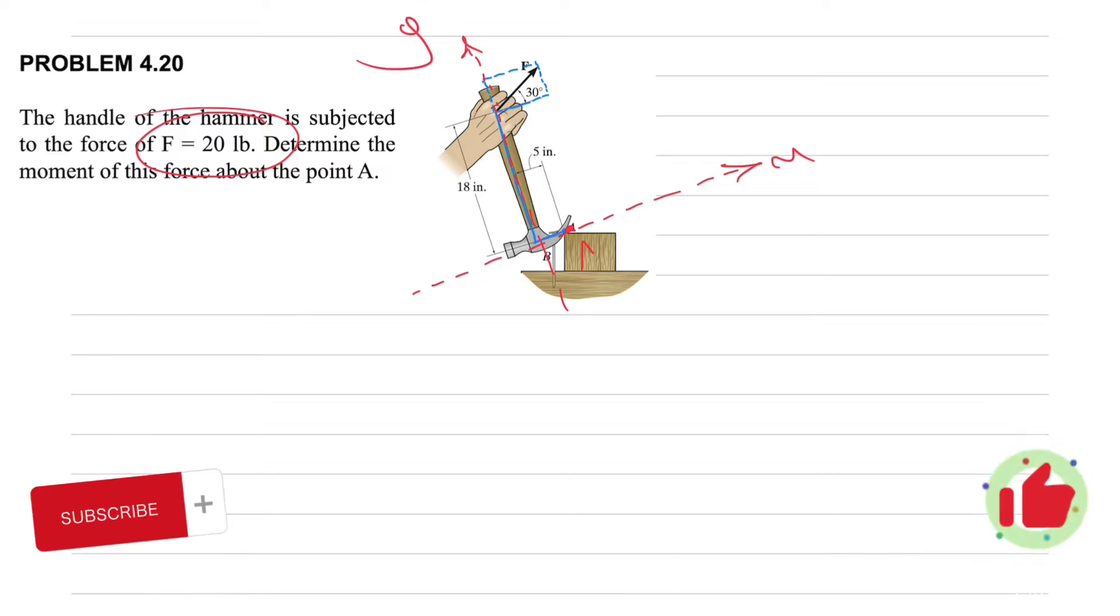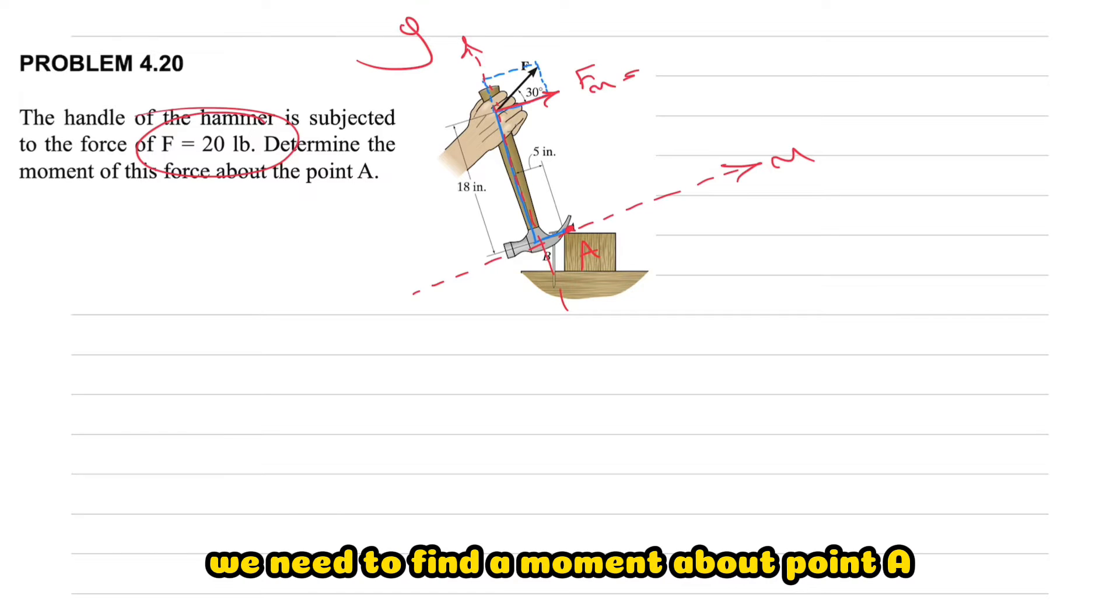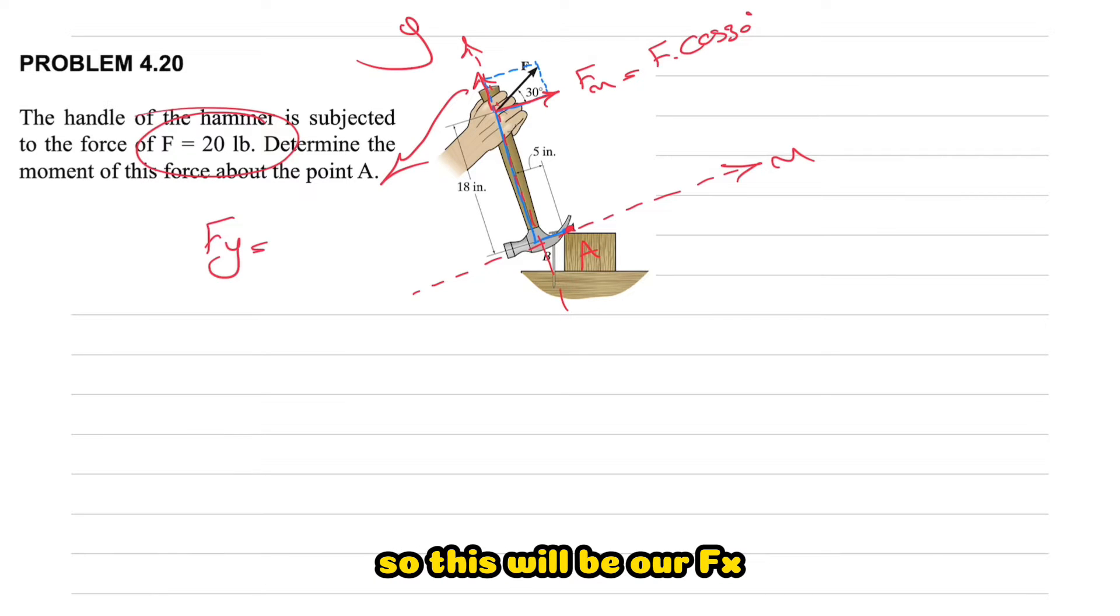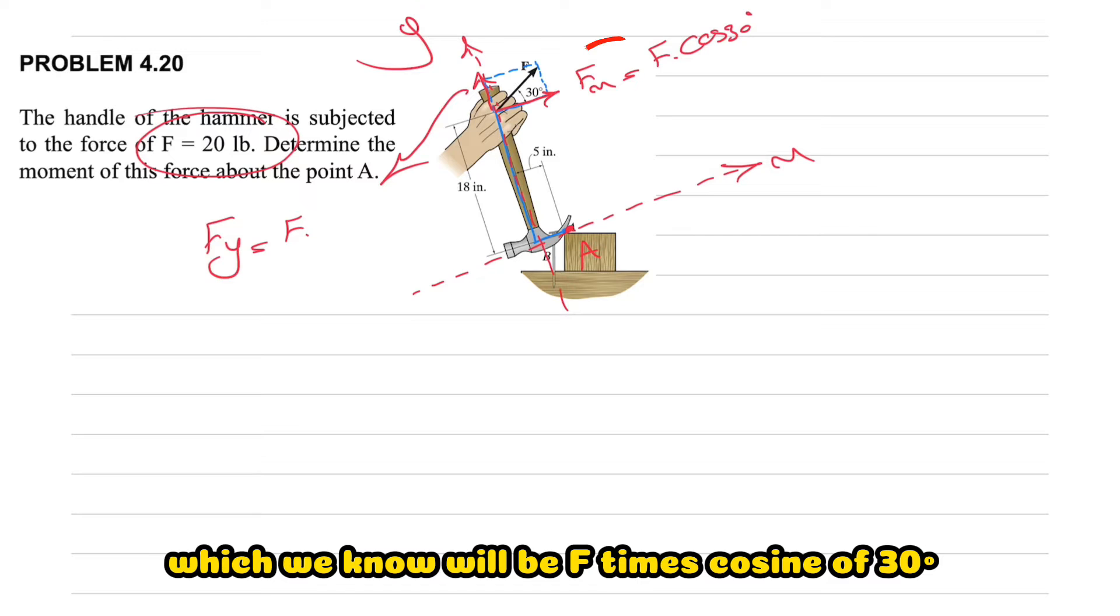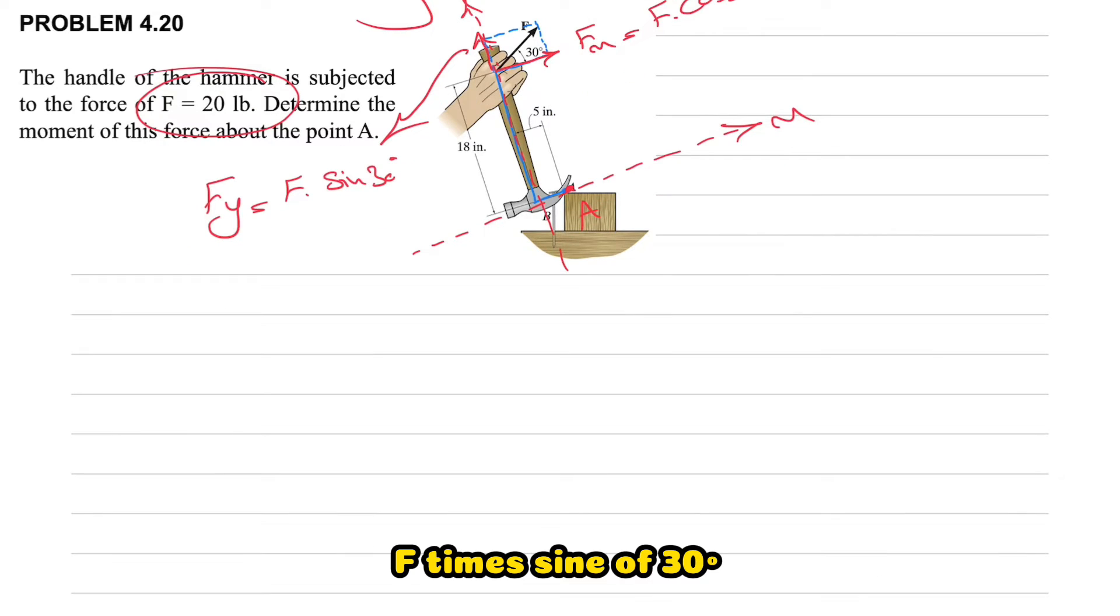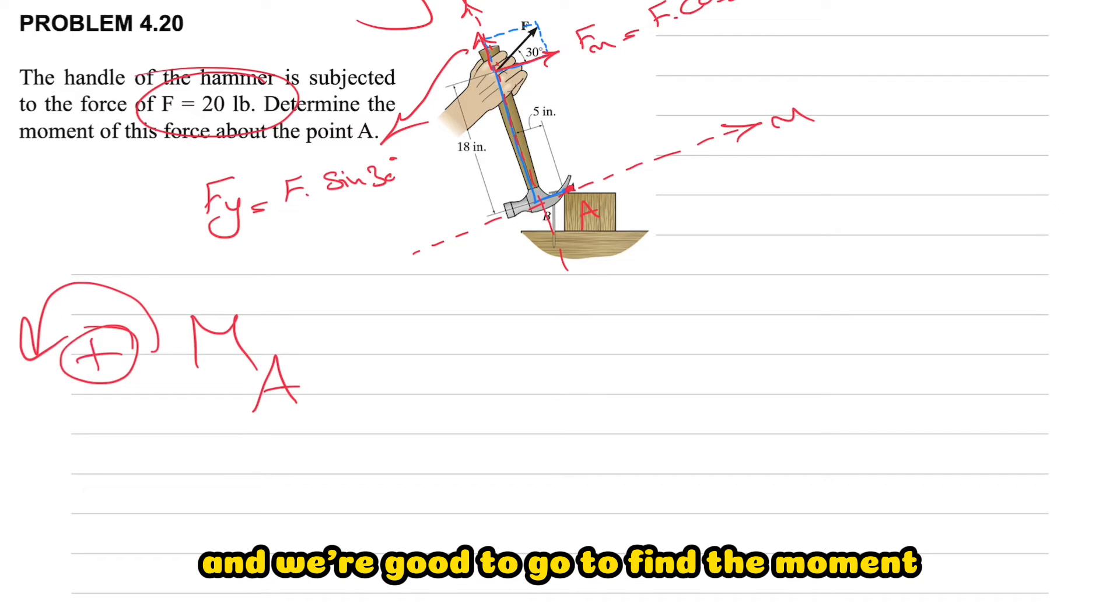For this question let's start with setting up our X and Y. Let's do that: X and this will be our Y. We need to find a moment about point A, so for F let's find our FX and FY first. So this will be our FX which we know will be F times cosine of 30 degrees, and this will be our FY which will be F times sine of 30 degrees. And we have all the distances in here and we're good to go to find the moment.